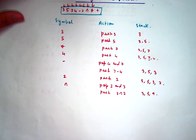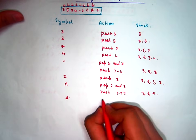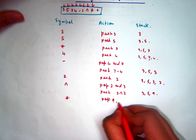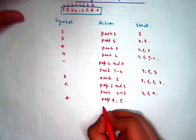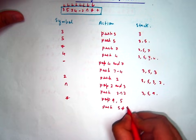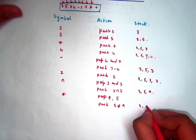Then comes the multiplication operator. What you have to do now is pop 9, 5 and push 5 into 9, that is 45.